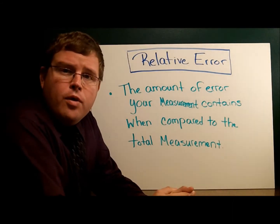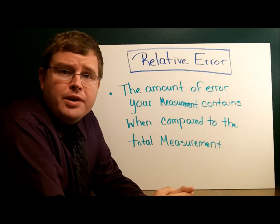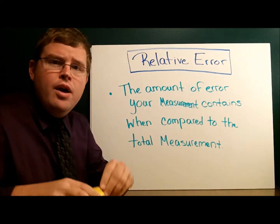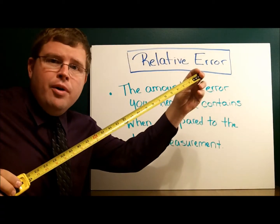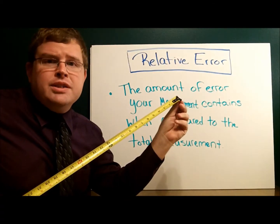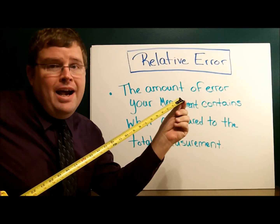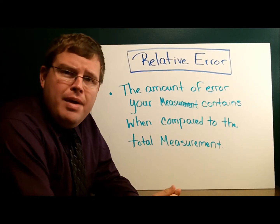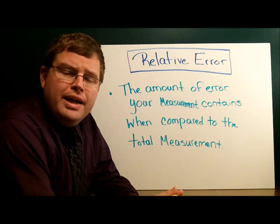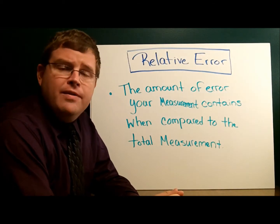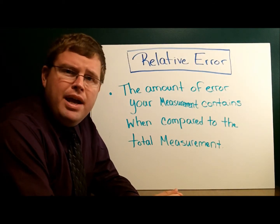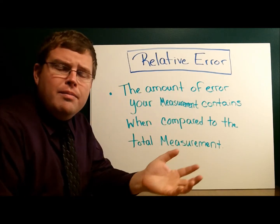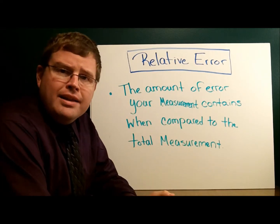When we take measurements or perform calculations, sometimes we're off a little bit. It could be because we rounded a number somewhere along the way, or maybe we read the measuring tape wrong and it said 35 inches and we wrote down 35 and a half. How significant is the error that we made? To make that determination, we use what we call relative error. Relative error simply compares the amount of error in your measurement with the total amount of the measurement.